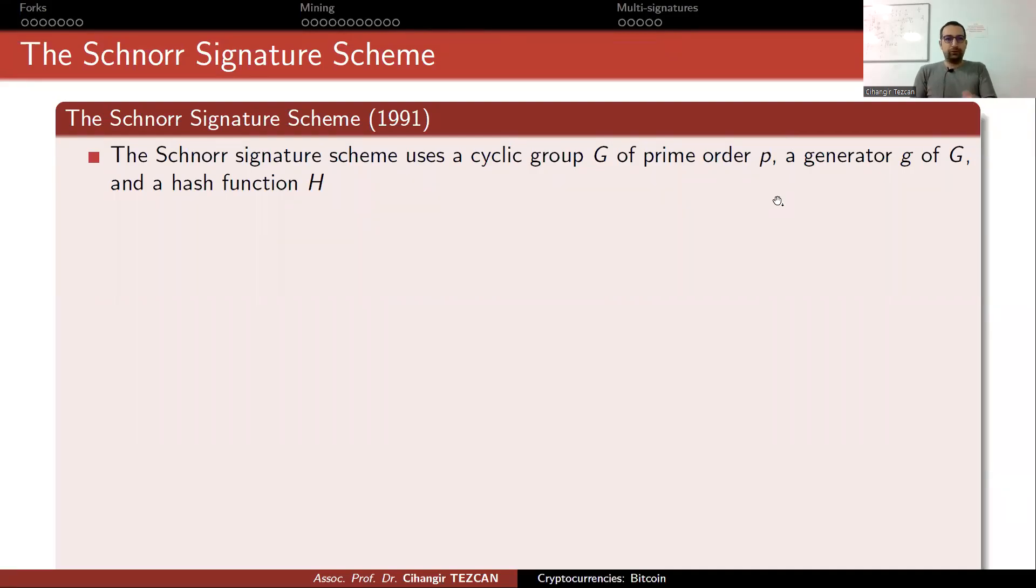All right, so let's now talk about Schnorr signatures, which is a new addition to Bitcoin. Instead of elliptic curve digital signature algorithm, you can also use Schnorr signatures. Both of them use the same elliptic curve, so nothing much changed. But Schnorr signatures have some advantages. As you can see, it dates back to 1991.